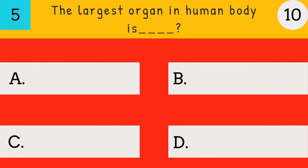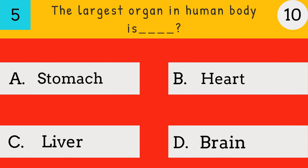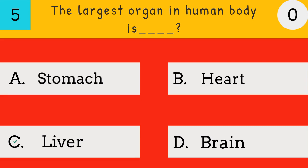The largest organ in the human body is: Stomach, Heart, Liver, Brain. Answer: Liver. The largest organ in the human body is liver.